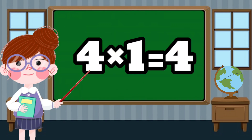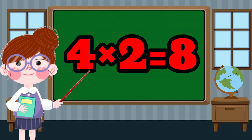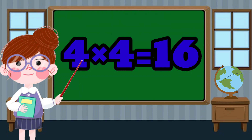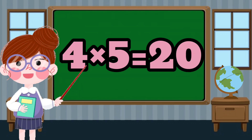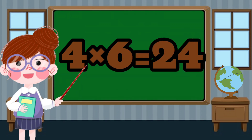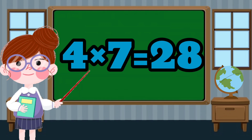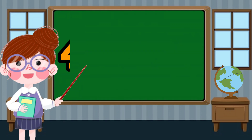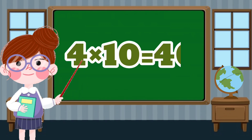4 times 1 equals 4. 4 times 2 equals 8. 4 times 3 equals 12. 4 times 4 equals 16. 4 times 5 equals 20. 4 times 6 equals 24. 4 times 7 equals 28. 4 times 8 equals 32. 4 times 9 equals 36. 4 times 10 equals 40.